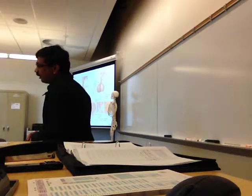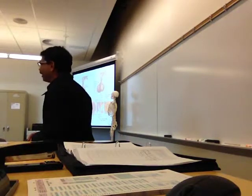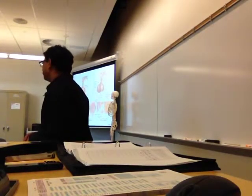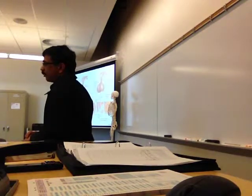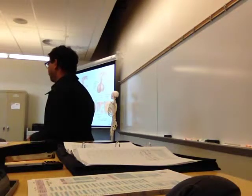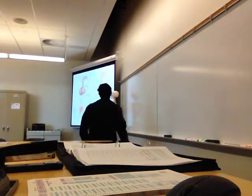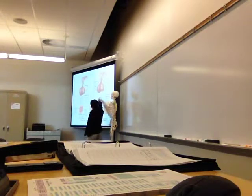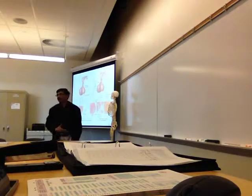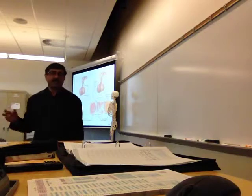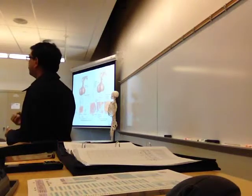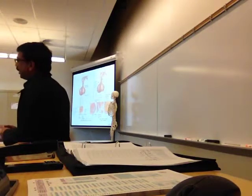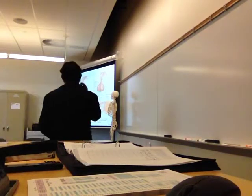A large amount of LH will be released suddenly, and that is called the luteinizing hormone surge. The sudden and large release of luteinizing hormone — the LH surge — is very important to cause the rupture of the Graafian follicle. So the sudden release of a large amount of luteinizing hormone causes the rupture of the Graafian follicle, and that is ovulation.